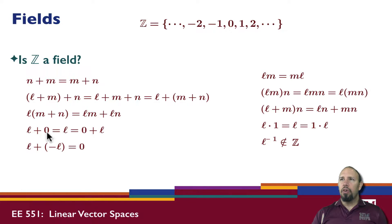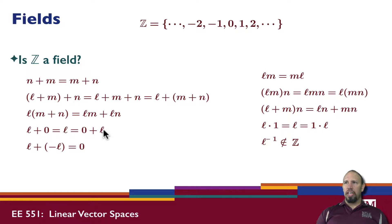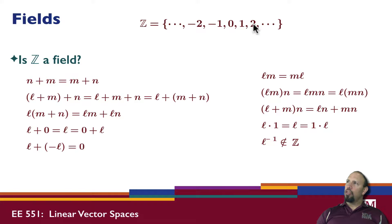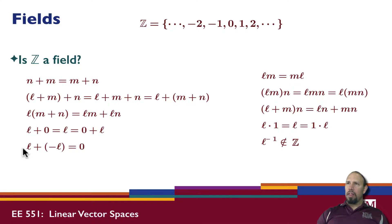We know that if we add zero to any integer we get the integer back. Because of the commutative property, adding zero equals adding zero on either side, so we just get L itself. Because I have negative numbers as well as positive numbers — if L is 2, then minus 2 also exists in the set — so minus L is in the set. Zero is in the set as well.